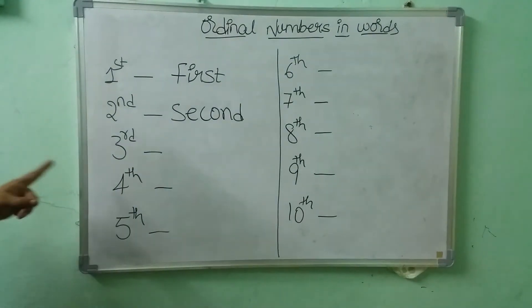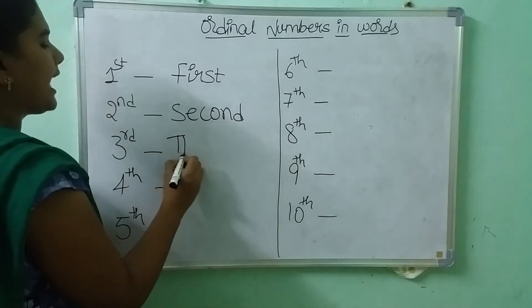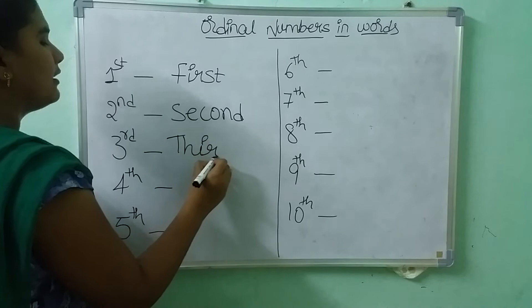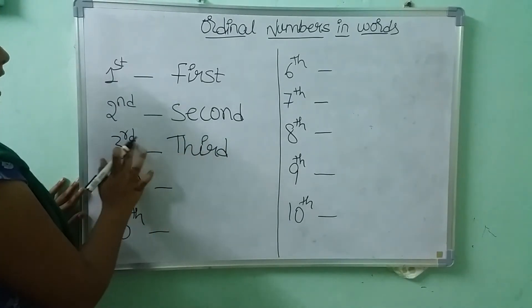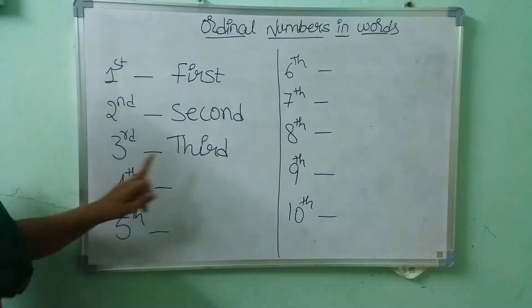And next we have third. What is this children? Third. Third. So T-H-I-R-D. T-H-I-R-D. This is third.